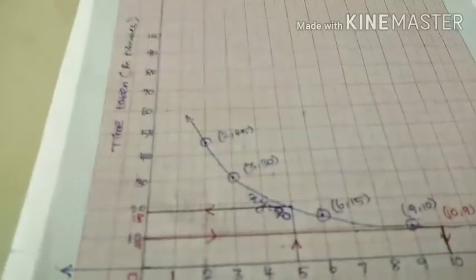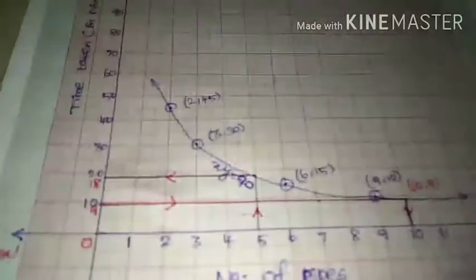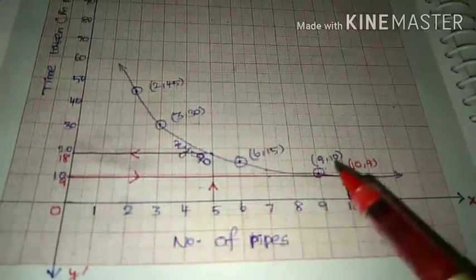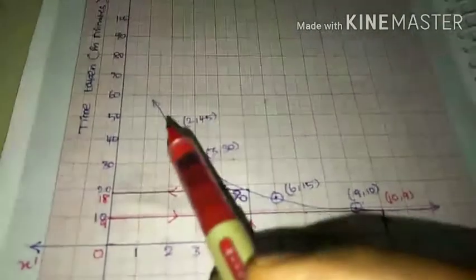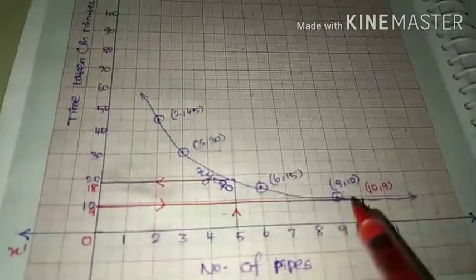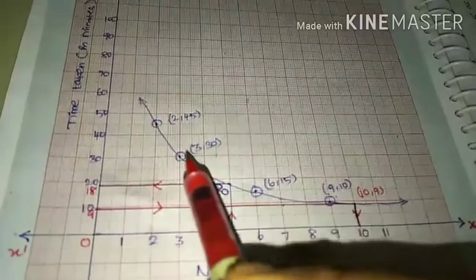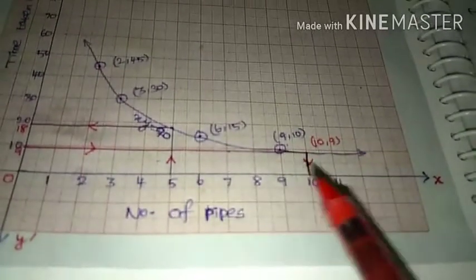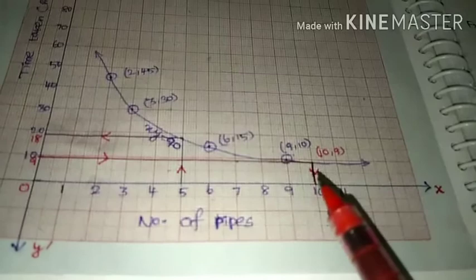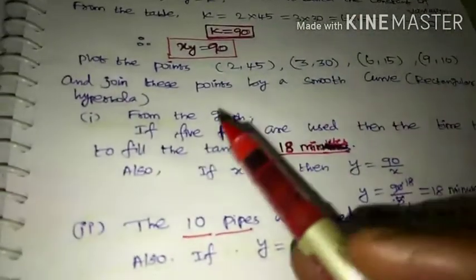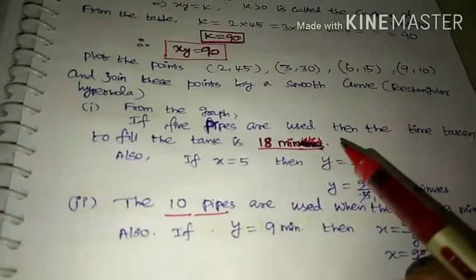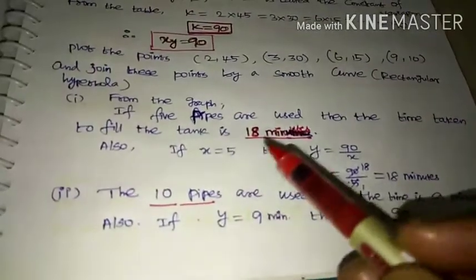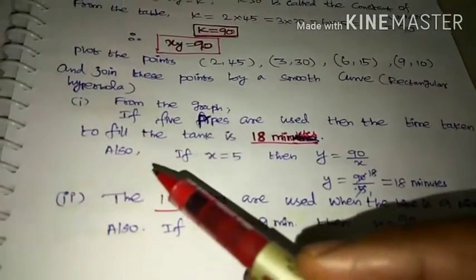The next point is (9, 10) — x-axis is 9, y-axis is 10. After fixing all four points, connect them with a smooth curve. From the graph, when 5 pipes are used, the time taken to fill the tank is 18 minutes.